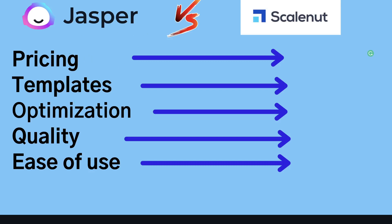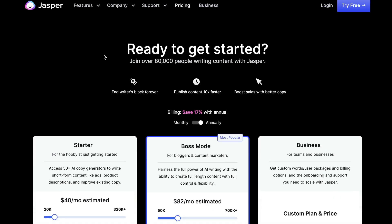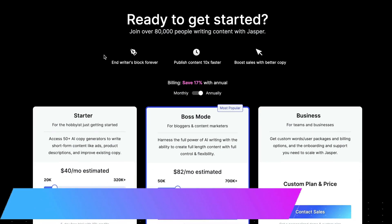In order to do a fair comparison, I'll be looking at the pricing differences between Jasper AI and Scalenut, the templates included in both tools, and I'll also be taking a look at and testing some optimization tools. I'll also be looking at the most important metric, which is the quality of output you can expect when using Jasper AI and Scalenut. And lastly, I'll be assessing how easy or beginner-friendly each one of these tools are. So let's get started by taking a look at the pricing differences, starting with Jasper AI.